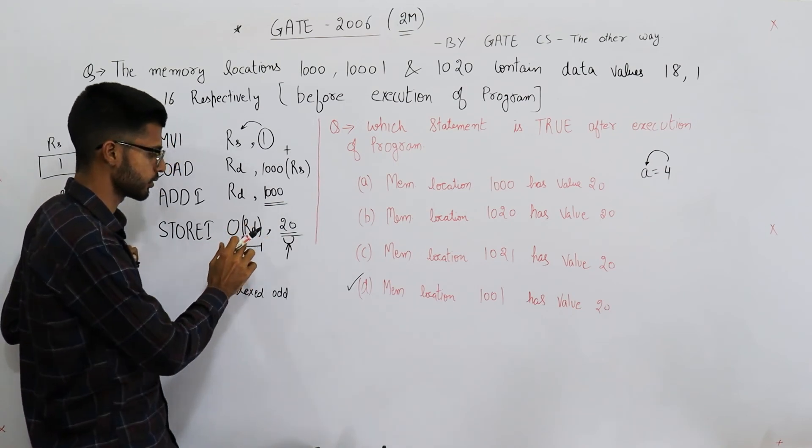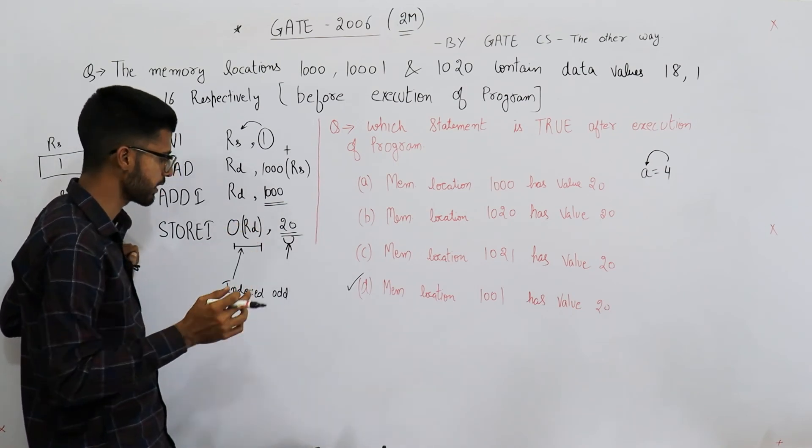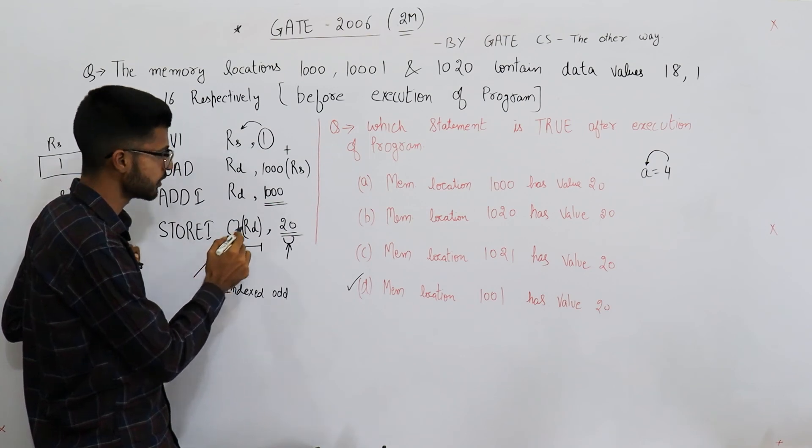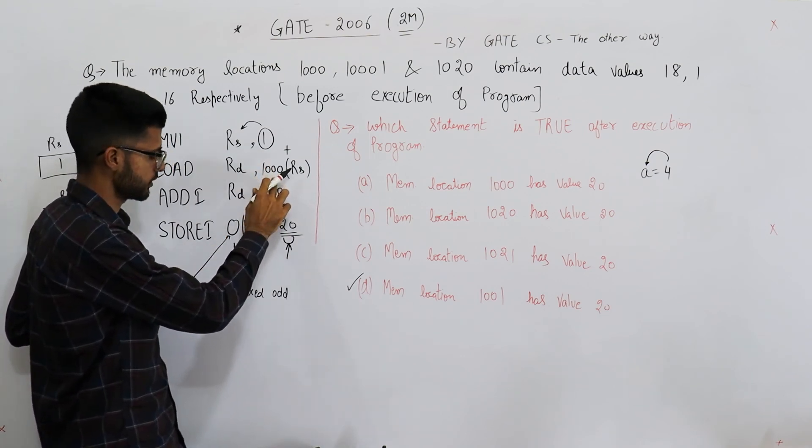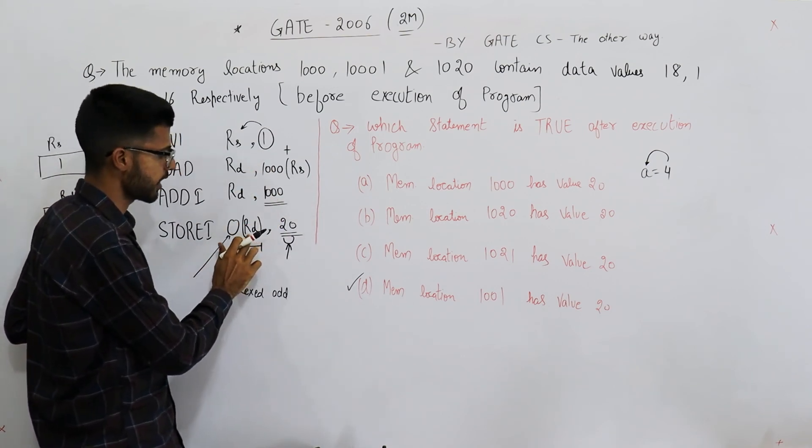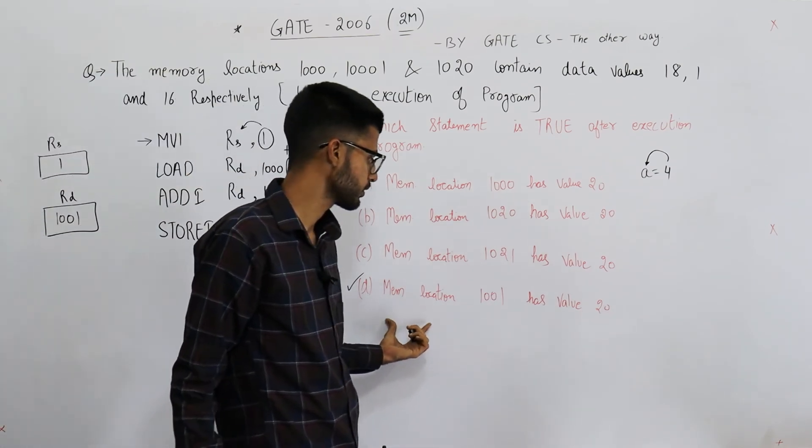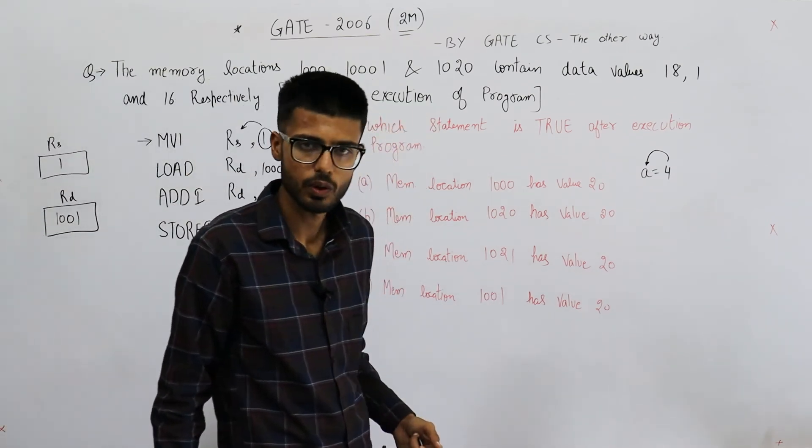This effective address can be obtained by adding this base - this zero is base, as we have seen this 1000 is base here - to this index. Rd contains the index. So we've seen that the answer was memory location 1001 has the value 20.